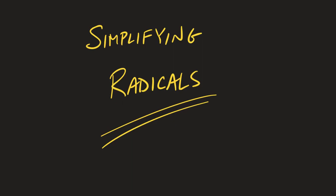Hey everybody, this is a clip — a pretty lengthy clip — from another video that goes into all the theory behind simplifying radicals. What we're going to look at today is just how, if you have a value that you cannot calculate, like root 24, we can use factor trees to reduce that radical to a more simple form. If you're looking for more of a how-to video, I think this is your thing. Work your way through it, see some examples, hopefully you like those factor trees as a means for simplifying radicals. Good luck.